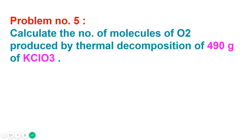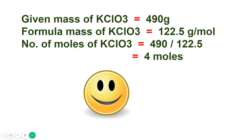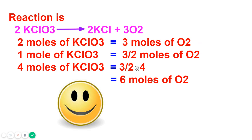Problem number five: calculate the number of molecules of oxygen produced by thermal decomposition of 490 grams of potassium chlorate (KClO₃). The given mass is 490 grams. The formula mass of KClO₃: potassium = 39, chlorine = 35.5, oxygen = 16 × 3 = 48; total = 122.5 g/mol. Number of moles = 490 ÷ 122.5 = 4 moles of KClO₃.